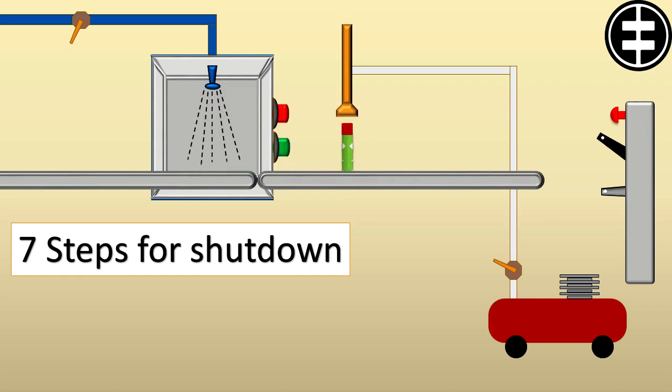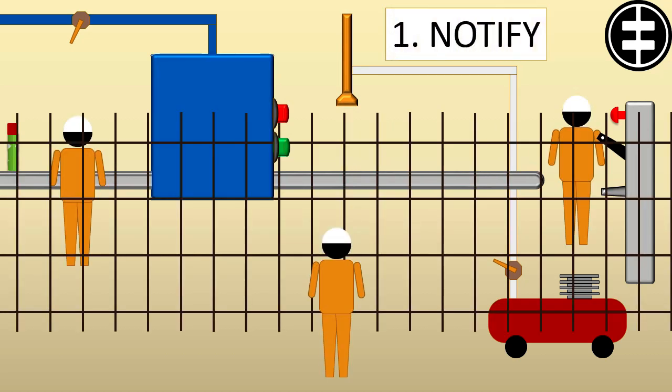7 Steps for Shutdown. 1. Notify. Notify all affected employees that you are going to be conducting a Lockout Tagout.